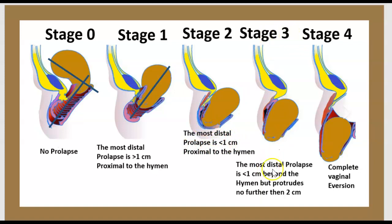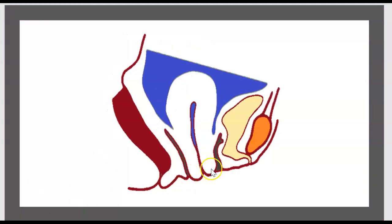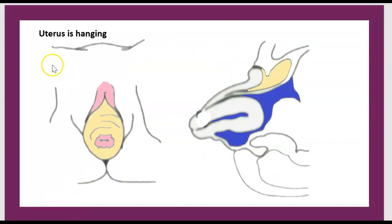Stage 4: complete vaginal evasion — the uterus has reached the level of the hymen. Procedencia: the uterus is hanging outside of the body.